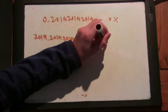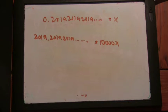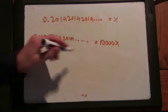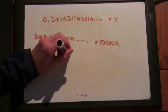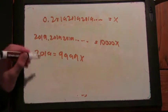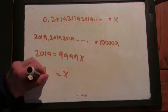This is 10,000x. So we know 2019 plus x equals 10,000x. So we know that 2019 equals 9,999x. So x is 2019 over 9999.